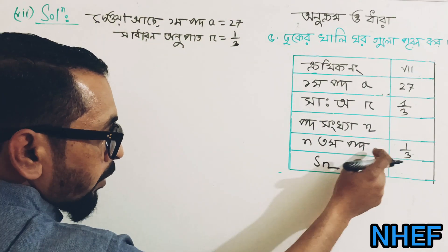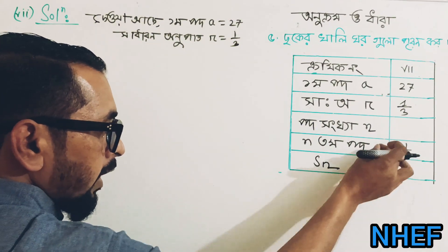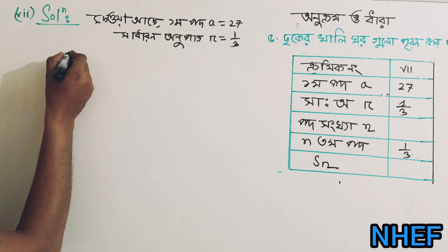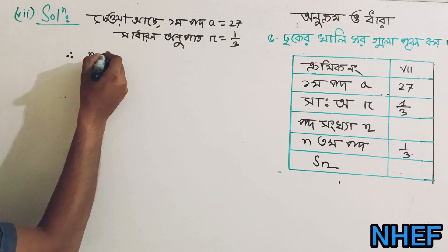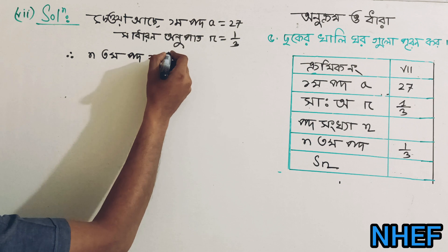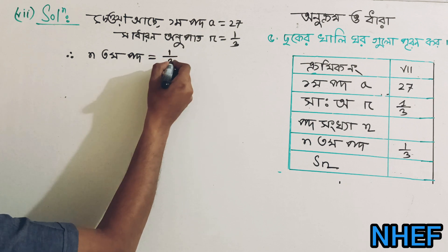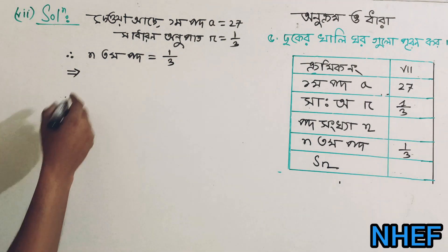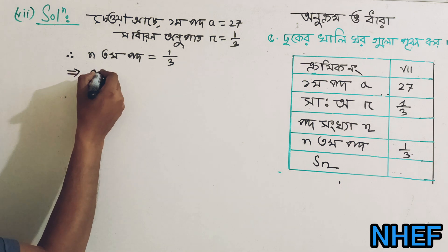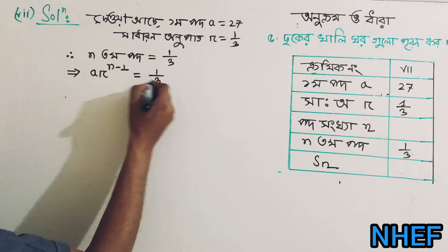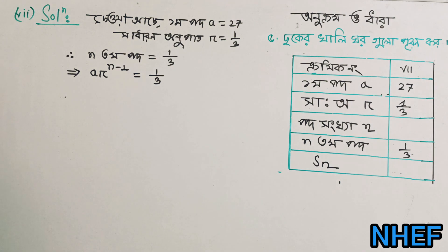The condition is that the n-th term equals 1 divided by 3. This means we are not counting the number of terms yet. Now, the n-th term by Gunuttara dhara (geometric progression) formula: a·r to the power n minus 1 is equal to 1 divided by 3. Very interesting.